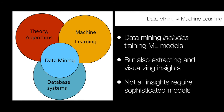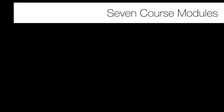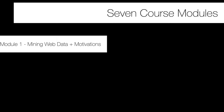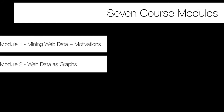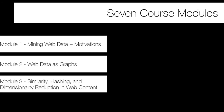In this version of IS-688, we have seven course modules. Module 1 is an introduction and set of motivations behind web mining — what is it, why do we do it, and how is it different from data science or machine learning? Module 2 looks at the internet and web data as graphs, including the structure of the internet and social networks embedded within Facebook, Twitter, and YouTube. Module 3 talks about how we can evaluate similarity between elements extracted from the web — individuals' purchasing behaviors, Netflix watching behaviors, or web pages and their text and images.